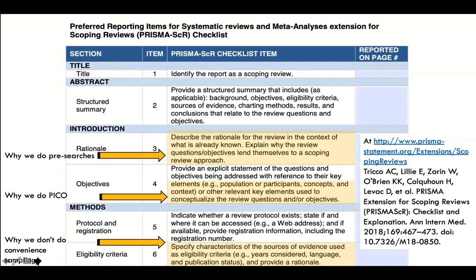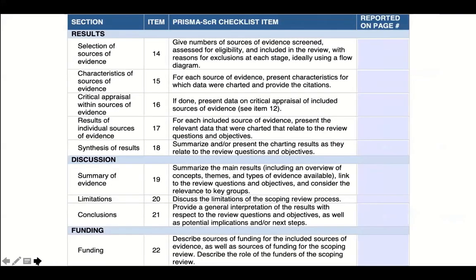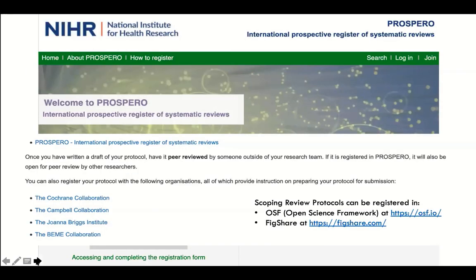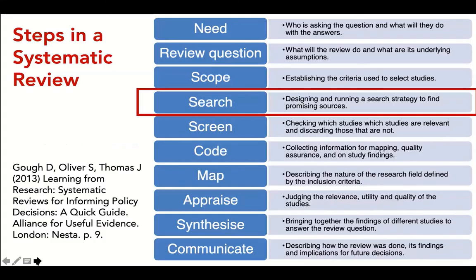So we're basically at the end of our time. We've covered the three main things: first, definitions and typologies of knowledge synthesis; then tools to help you ask better questions; and places to do your pre-search so you can fill out your protocol — and you see how every step feeds into a better protocol. Prospero is where you can find protocols for systematic reviews, and scoping review protocols can be found in OSF or Figshare.